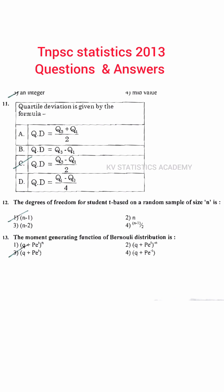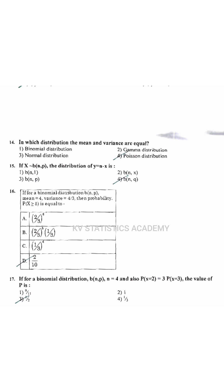The moment generating function of Bernoulli distribution is Q plus PE to the power T. In which distribution the mean and variance are equal? Poisson distribution.